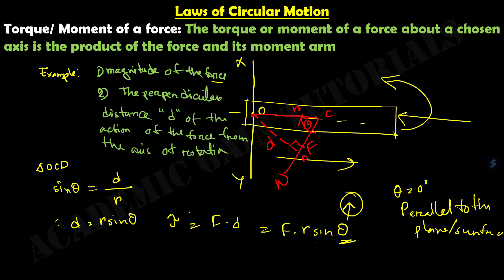One important thing to remember: torque is a vector quantity, and force is also a vector quantity. R is the position vector, and because there is a sin theta involved and both are vector quantities, we can write tau equals R cross F. Since this is a vector product, this multiplication is known as the cross product.